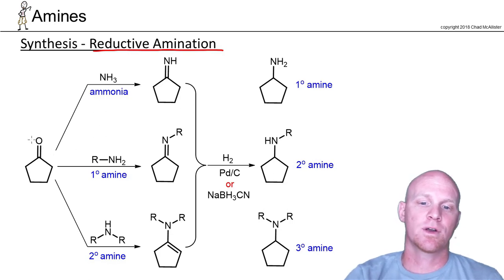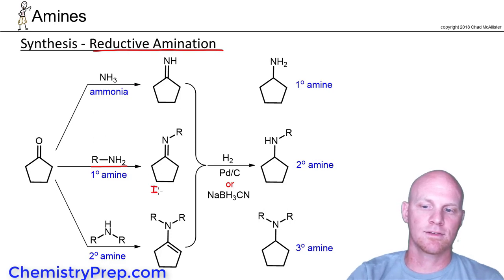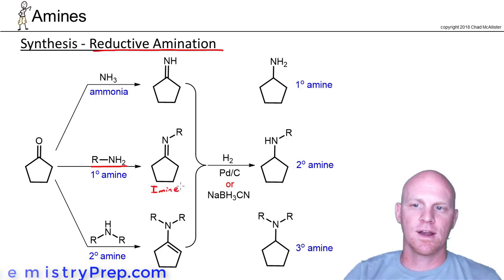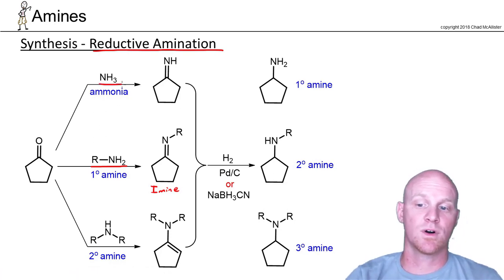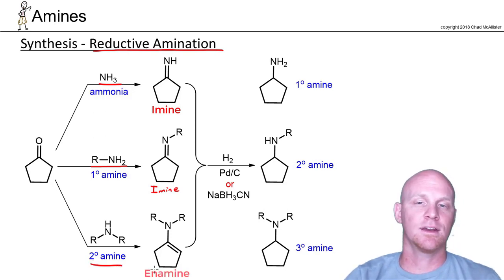If we start with a ketone or aldehyde and add a primary amine, we will create an amine. We can do that with a primary amine or simply with ammonia as well — both of those create an amine. Whereas if we use a secondary amine, we'll create an enamine.